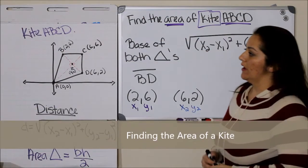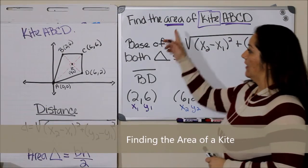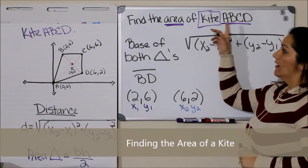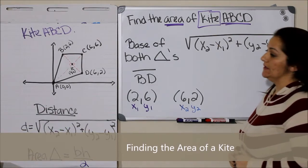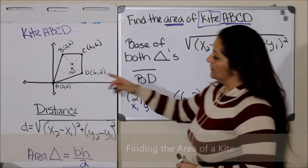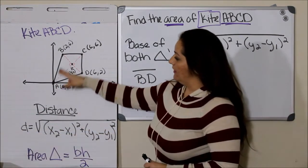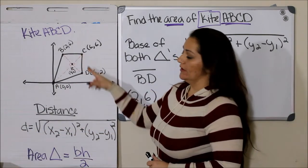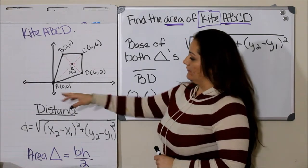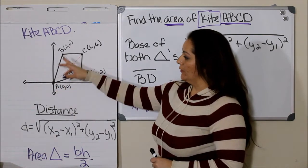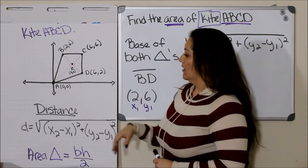In this problem we're asked to find the area of kite ABCD. As you can see, we have the kite on a coordinate plane and we have all of our points labeled.